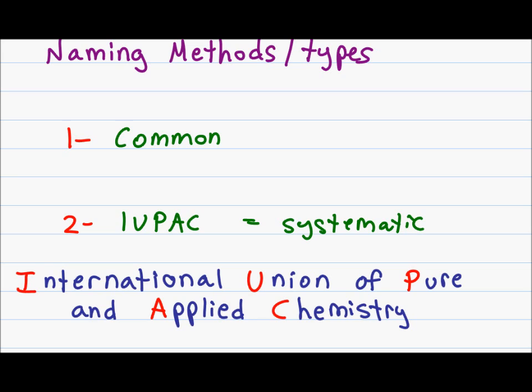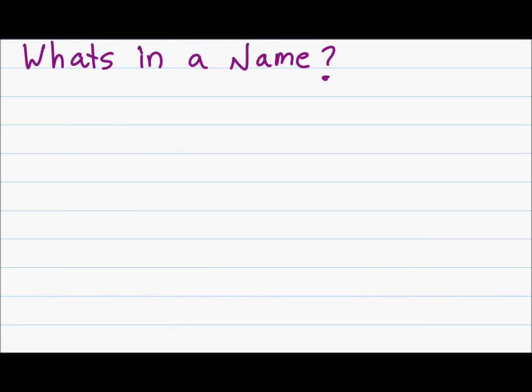IUPAC stands for International Union of Pure and Applied Chemistry. The reason it's useful is because it provides us with a systematic or step-by-step way of naming different types of molecules. The next thing to ask yourself is what's in a name.